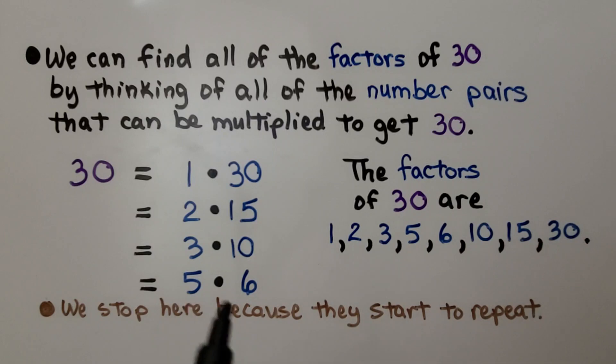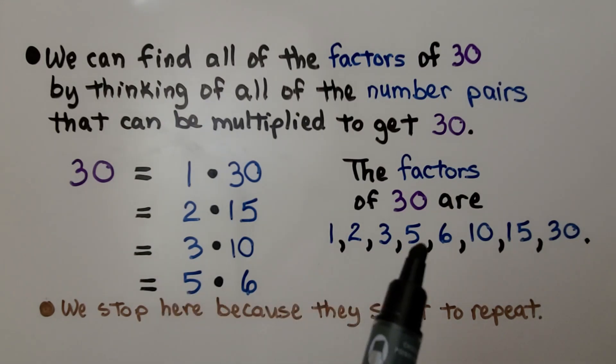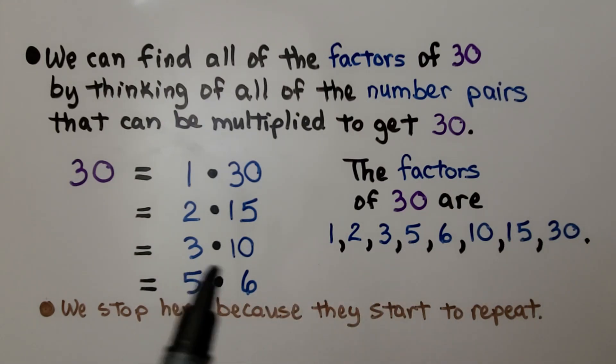And we stop here at the 5 times 6 because they start to repeat. We'll just have 6 times 5. That's the same thing as a 5 and a 6 for the factors. So it doesn't matter the order. So we stop.